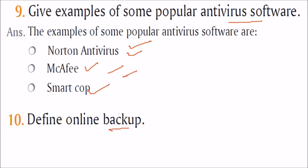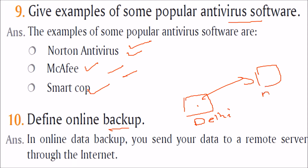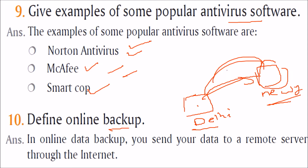Define online backup. Online backup means your system is here — say in Delhi — and you are sending data to say New York and remotely backing it up. So whenever there is a problem in Delhi or New York, you can easily get or restore the data back.